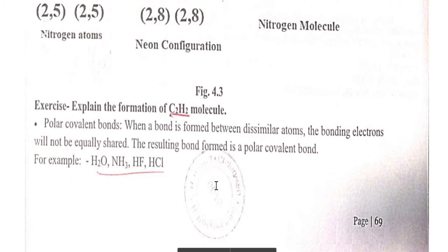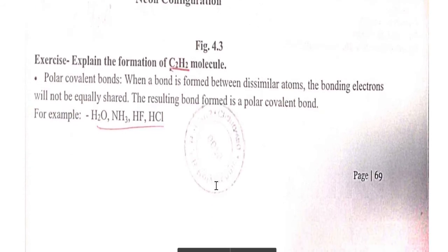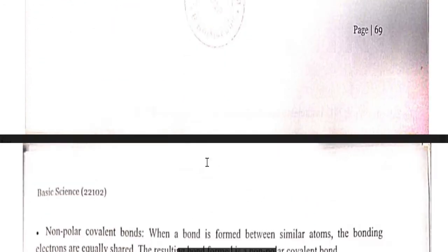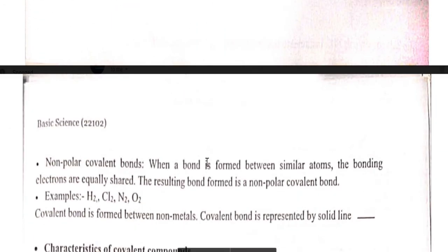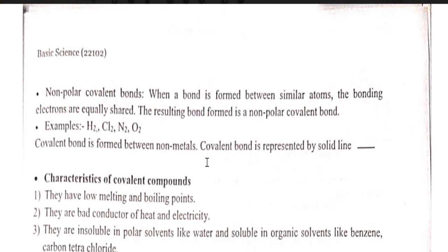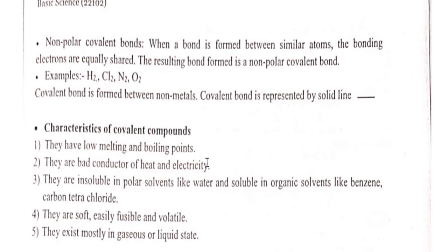Polar compounds: when bonding electrons are not equally shared, the resulting bond is a polar bond. Examples are H2O, NH3, HF, and HCl. Non-polar compounds are H2, Cl2, N2, and O2. Important properties of covalent compounds: they have low melting point and boiling point — this is frequently asked in examinations.